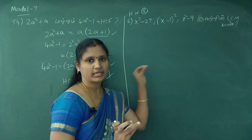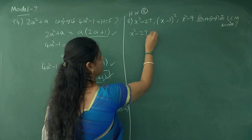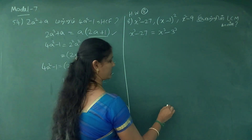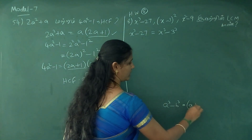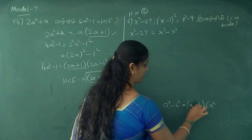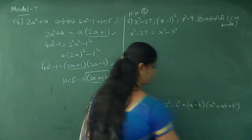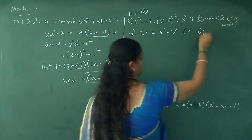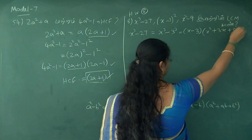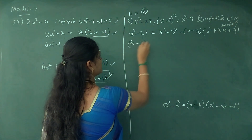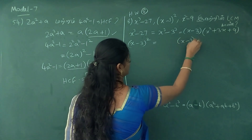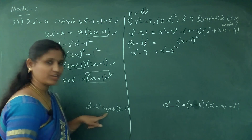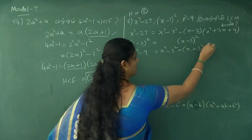Let's say x cubed minus 27, which is x cubed minus 3 cubed. Using the a cubed minus b cubed formula: a minus b into a squared plus ab plus b squared. So we get x minus 3 into x squared plus 3x plus 9. And 3 squared is 9. Also x minus 3 the whole square, and x squared minus 9 equals x squared minus 3 squared — using a plus b into a minus b.